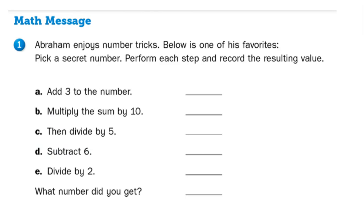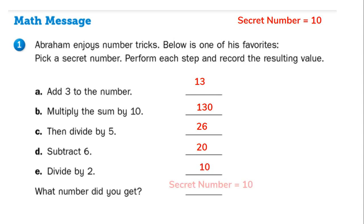Let's take a look at the math message. Abraham enjoys number tricks — below is one of his favorites. Take a secret number, perform each step, and record the resulting value. My secret number is going to be 10. First, add three: 3 plus 10 is 13. Then multiply the sum by 10: 13 times 10 is 130. Then divide by five: 130 divided by 5 equals 26. Then subtract 6: 26 minus 6 is 20. Then divide by two: and I have 10 — my secret number.